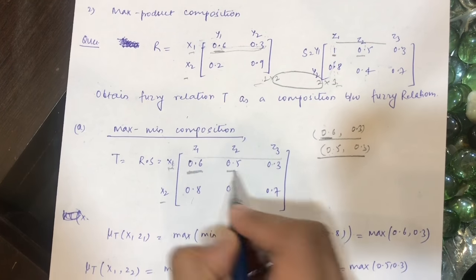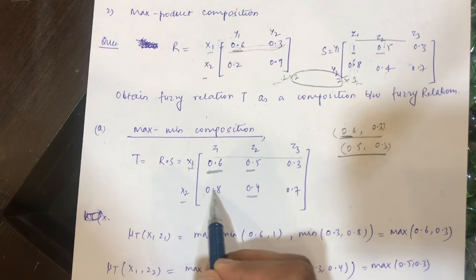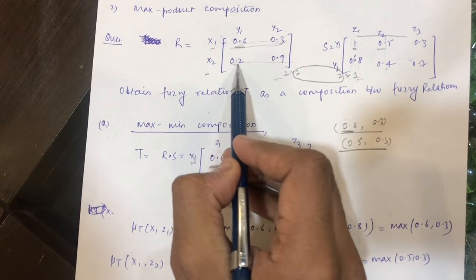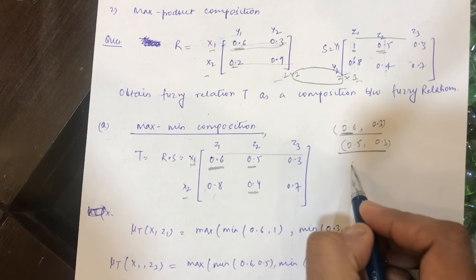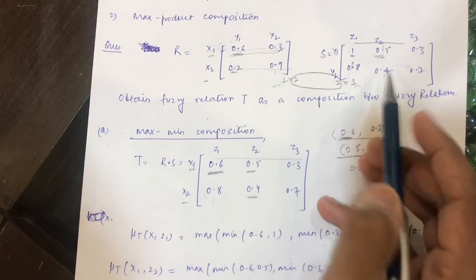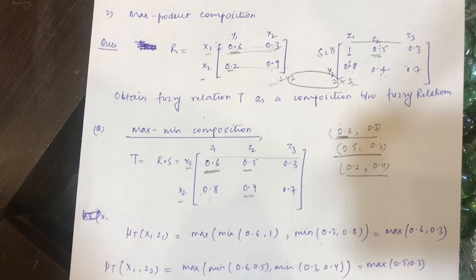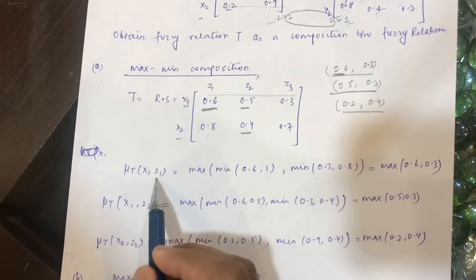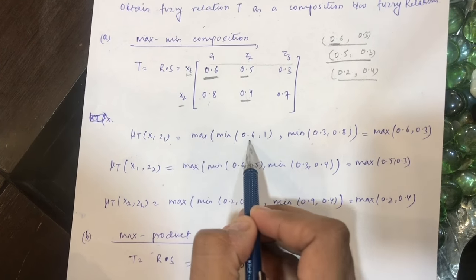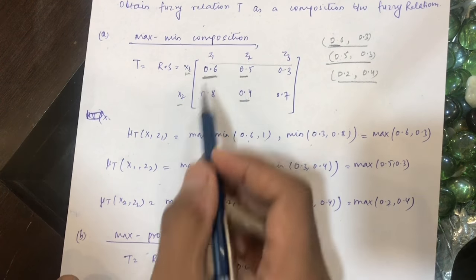For x2, z2 — second row and second column — we take the second row of R and the second column of S. We compute min(0.2, 0.5) = 0.2, then min(0.9, 0.4) = 0.4, and the maximum is 0.4. So 0.4 goes in that position. In notation, we write: μ_T(x1, z1) = max[min(0.6, 1), min(0.3, 0.8)] and so on to obtain the full matrix.